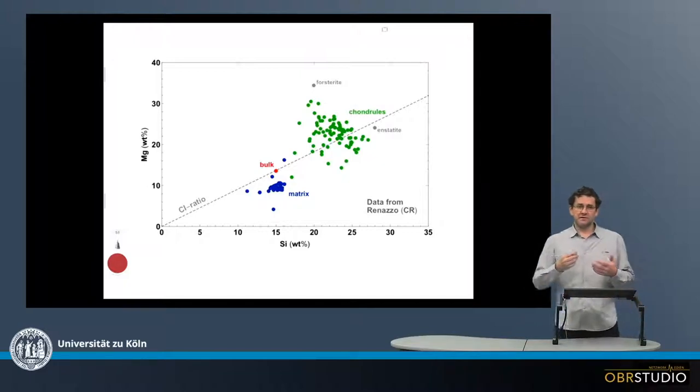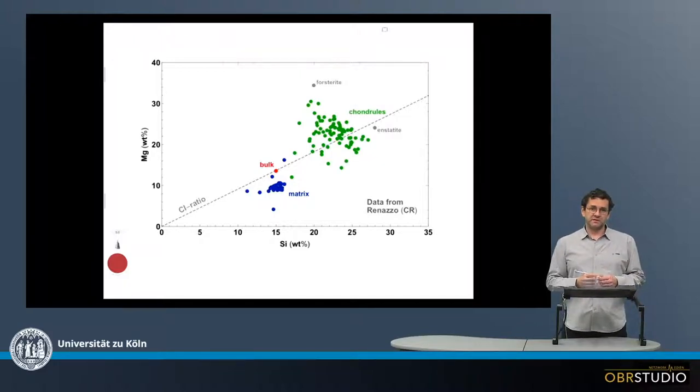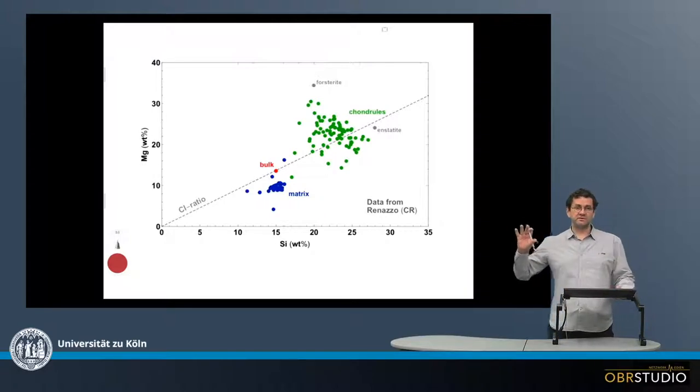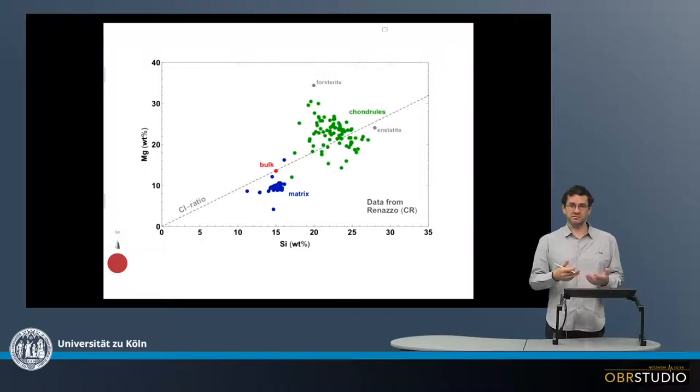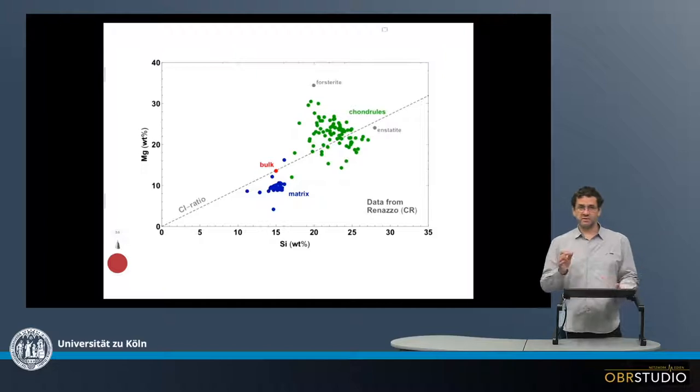The first essence of complementarity is an observation that the chondrules and matrix have different compositions and together add up to the bulk chondrite composition. This sounds at first rather trivial, but there's one important twist I'll come to in a minute.